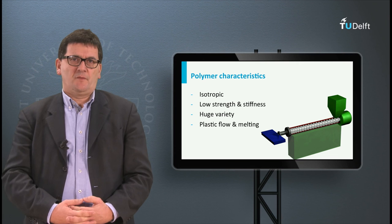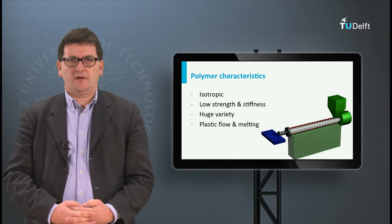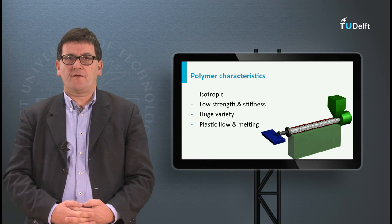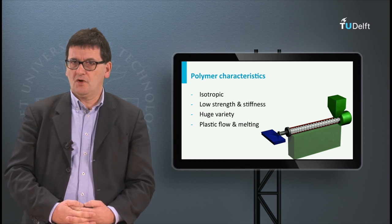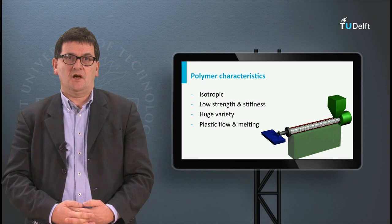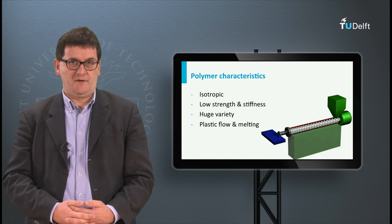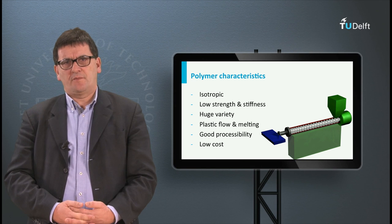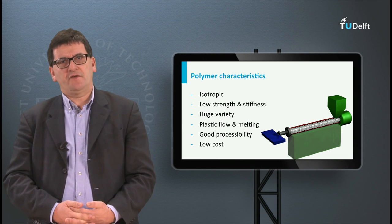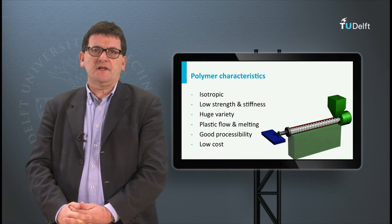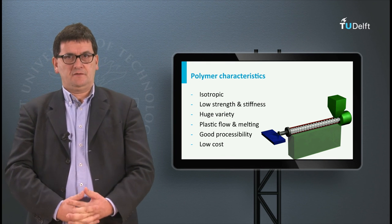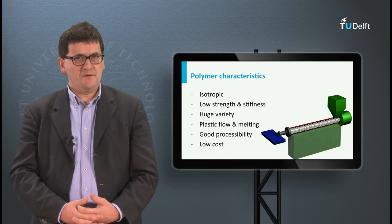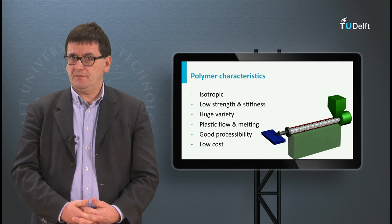Looking at the properties of polymers, we see that polymers are isotropic, just like metals. We also see that polymers have low strength and stiffness. Furthermore, the diversity in polymers is huge — there are many different specific polymers. Polymers are also easy to process; in the case of thermoplastics, they can be melted and have significant plastic flow, as seen in the injection molding process shown, which is very widely used in the plastics industry. Also, the base polymers are usually very cheap materials.